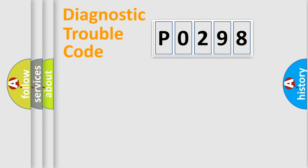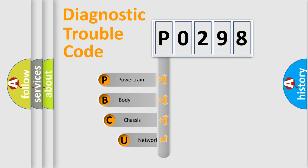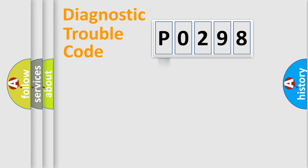Let's do this. First, let's look at the history of diagnostic fault code composition according to the OBD2 protocol, which is unified for all automakers since 2000. We divide the electric system of an automobile into four basic units: Powertrain, Body, Chassis, and Network.